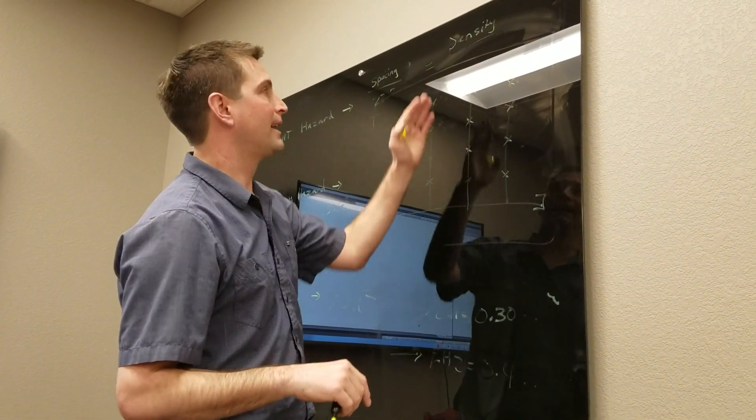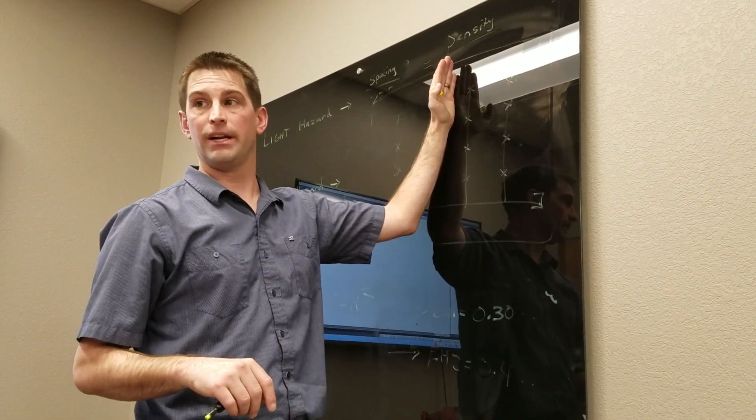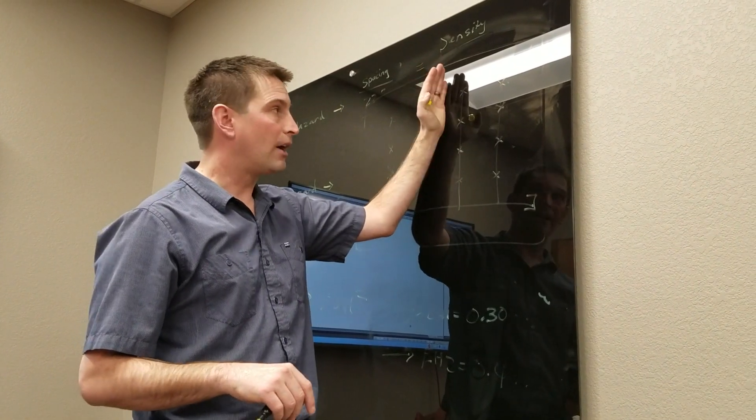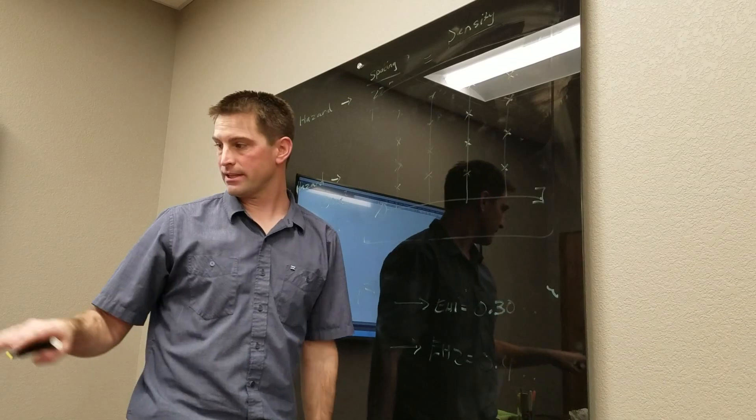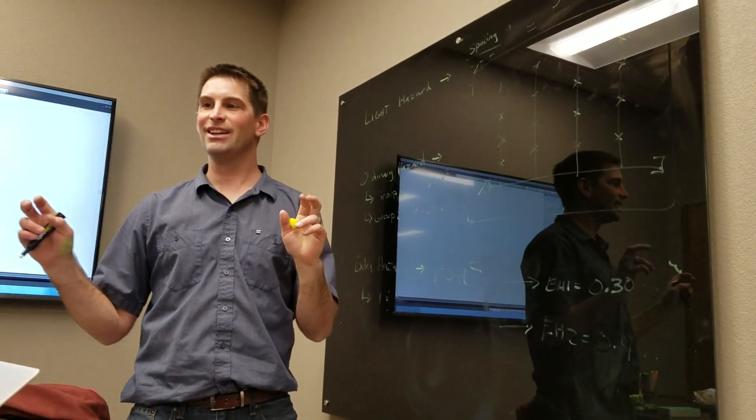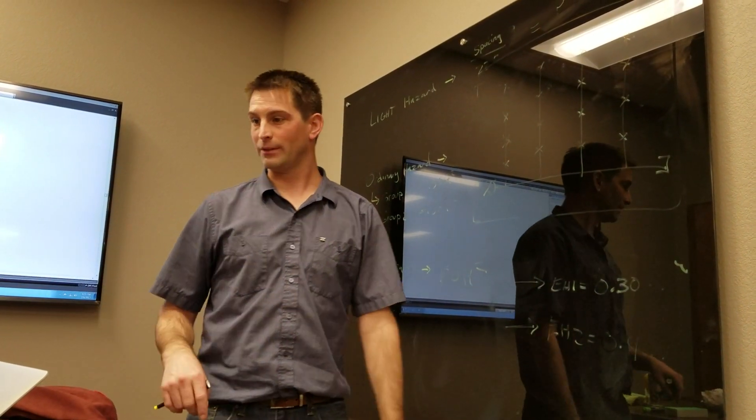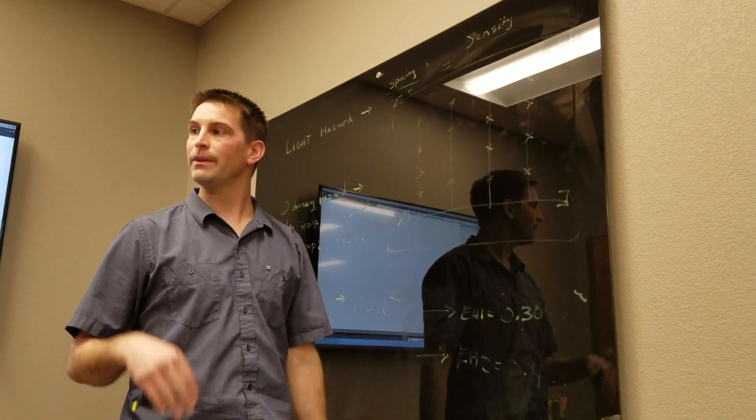So you're like, okay, I've got to encompass 1,500 square feet of area in my calculations. So how do I draw this area? It says then that it should be rectangular in shape. It's kind of rectangular in shape, right?